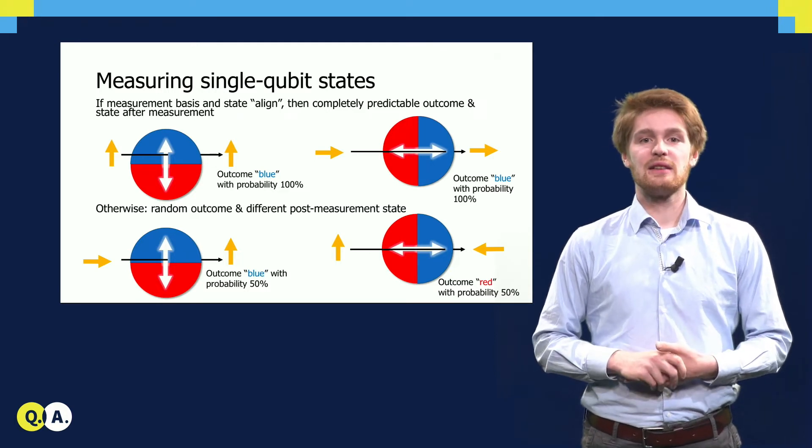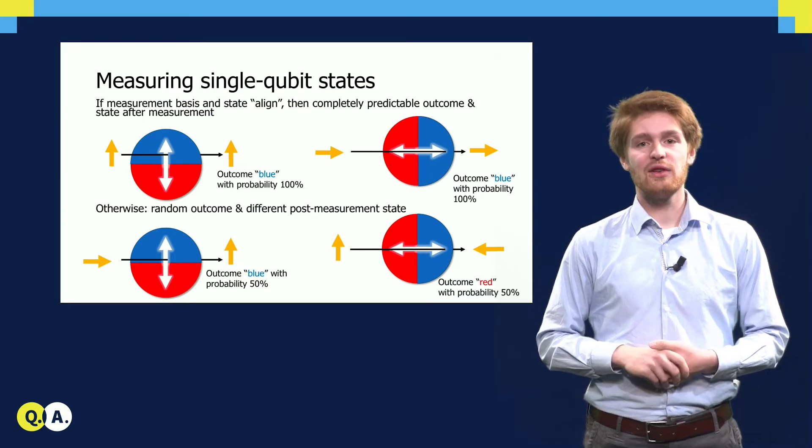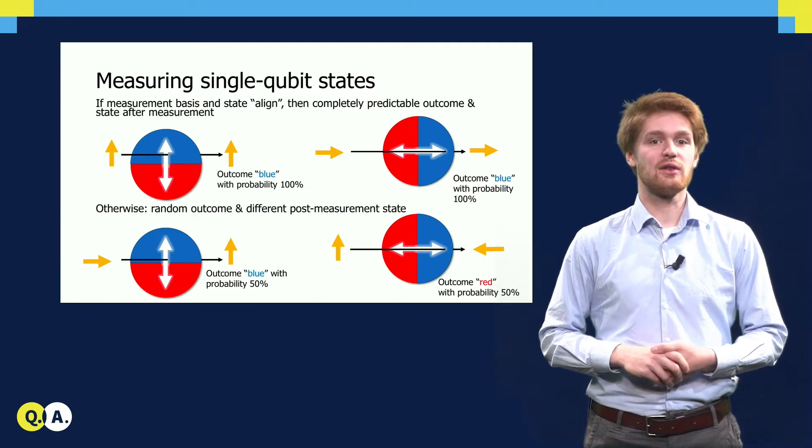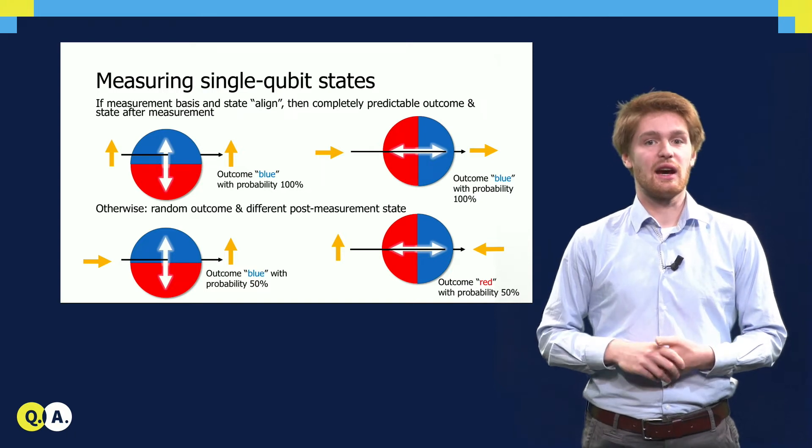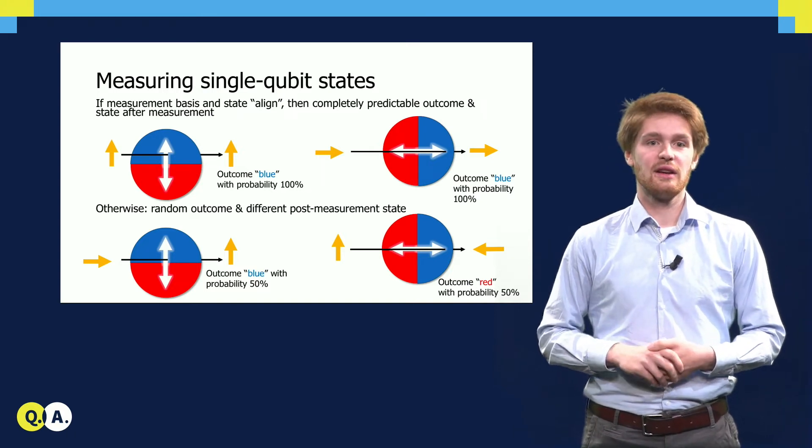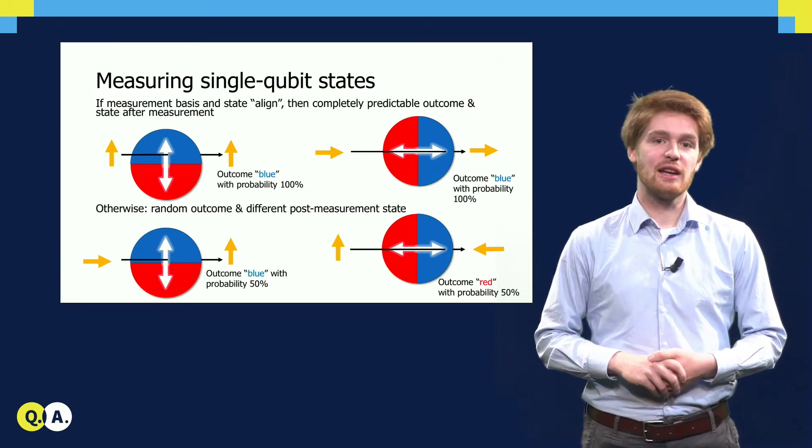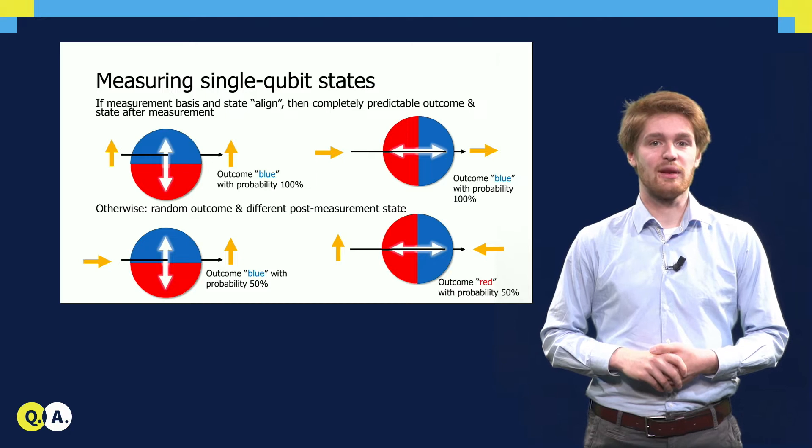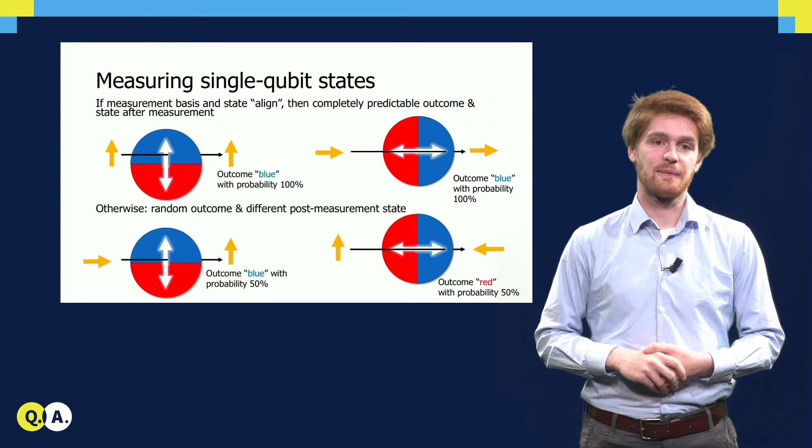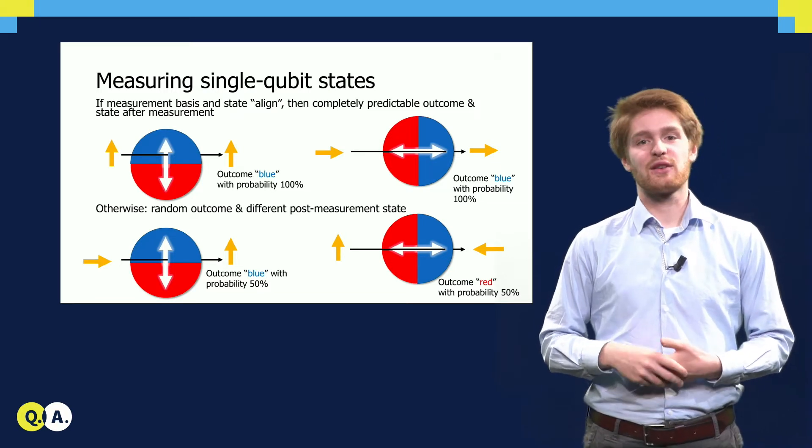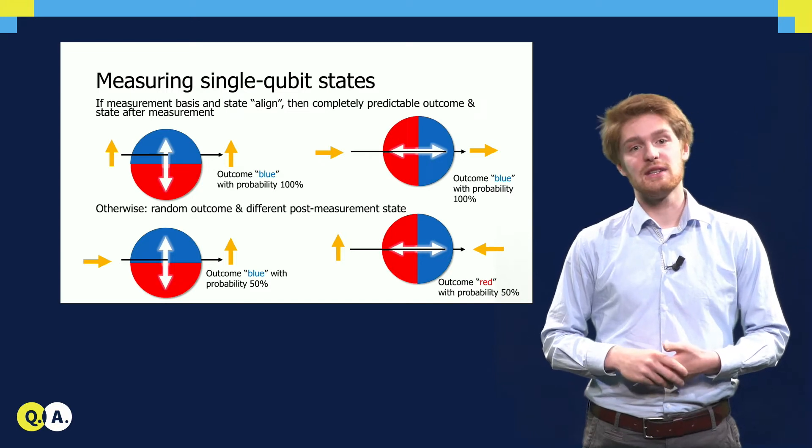When the measurement basis and the qubit state do not align, the situation is very different. In the example in the left lower corner, the horizontal state is measured in a vertical measurement basis. The state then flips to vertical direction, either to up or to down, each with a probability of 50%. The measurement outcome is precisely related to the direction of the arrow after the flip. Blue if the state flipped to up, and red if the state flipped to down. Analogously, measuring a vertical state in a horizontal basis also yields a completely random outcome, as can be seen in the lower right corner.